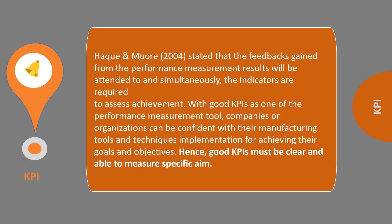Hagen Moore 2004 explained that feedback gained from the performance measurement results will be attended to simultaneously and the indicators are required to assess achievement. So with good KPIs, as one of the performance measurement tools, companies or organisations can be confident with their manufacturing tools and machines implementation for achieving their goals and objectives. Good KPIs must be clear and must have a specific aim in terms of knowing what you want to achieve, and this can be applied to any industry, any organisation, anywhere.